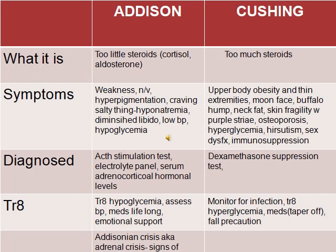With Addison, everything is down — steroids, sugar, sodium — and the skin shows hyperpigmentation. Addison is diagnosed with an ACTH stimulation test, electrolyte panel, and serum adrenal cortical hormone levels. Cushing is diagnosed with a dexamethasone suppression test.